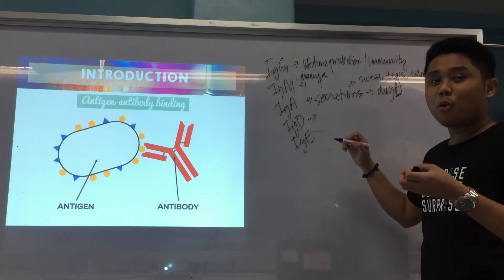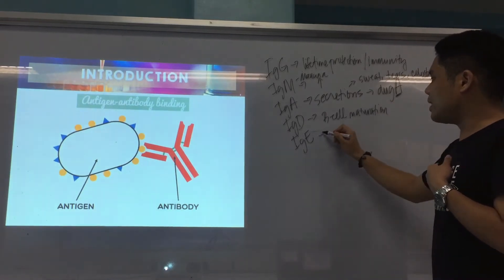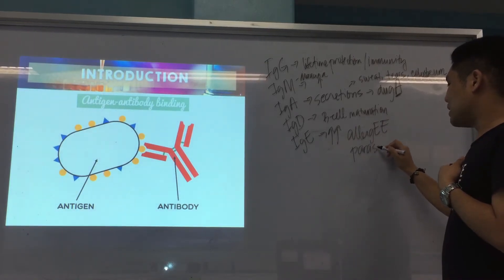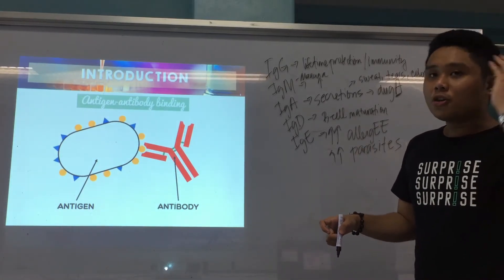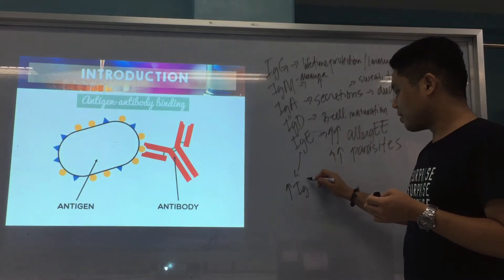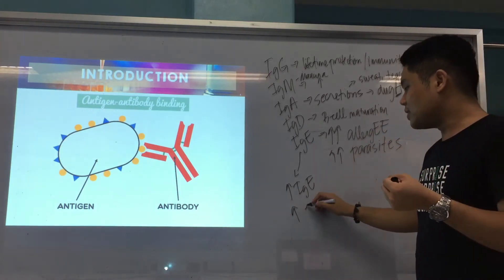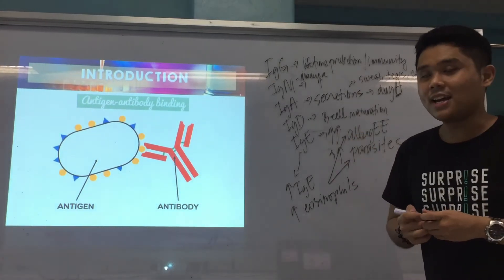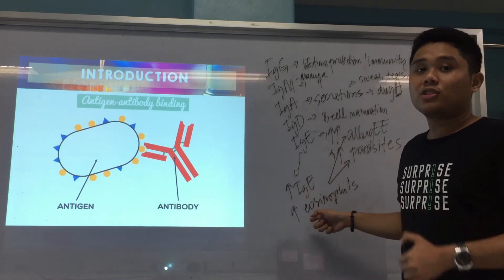IgD is used for B-cell maturation, which is a type of your lymphocyte. IgE is usually increased in allergies and parasitic infections — and this is what we are after in parasitology. In laboratory results of a patient, if IgE is increased together with increased eosinophils, they usually point to a parasitic infection or an allergic reaction. For parasitology specifically, we're looking at IgE and eosinophils.